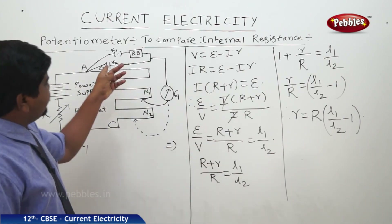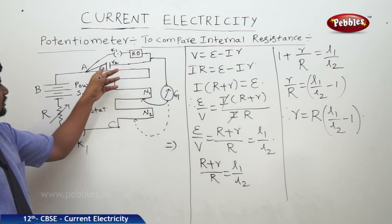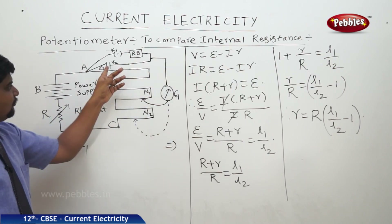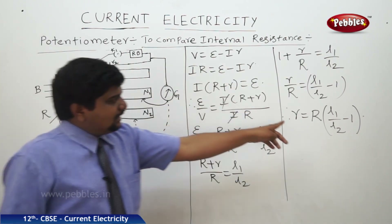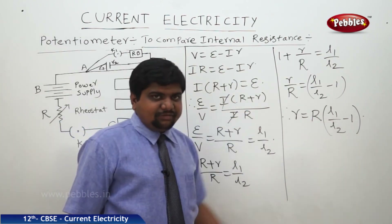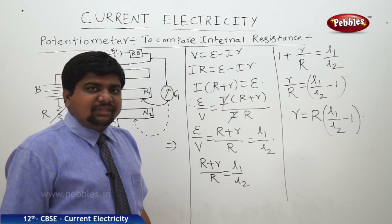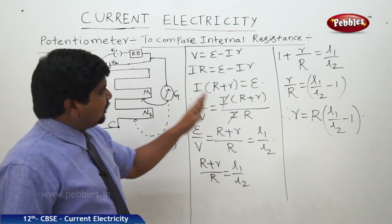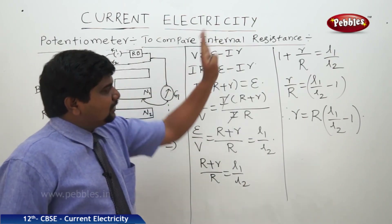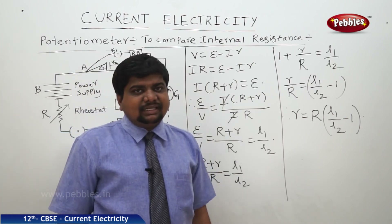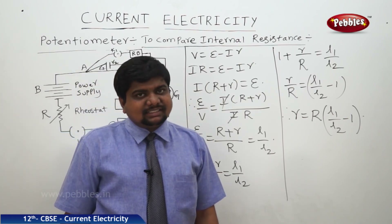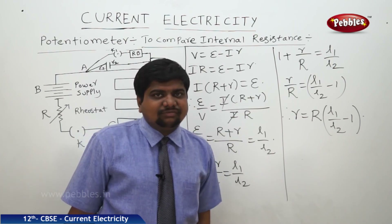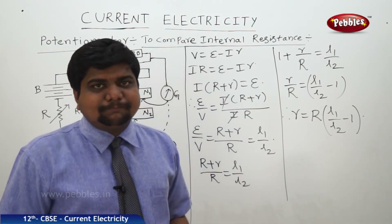With this method, we can also place another cell of different EMF and get the same equations, then find out the ratio of r1 by r2 to compare the internal resistances of two cells. These are all the examples and applications of Kirchhoff's laws.